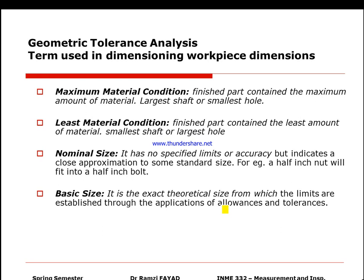We have what's known as maximum material condition. The finished part contains the maximum amount of material — so a larger shaft or smallest hole. If the hole is bigger, less material is used; if the hole is smaller, more material is present. The least material condition is the contrast: smallest shaft and largest hole.